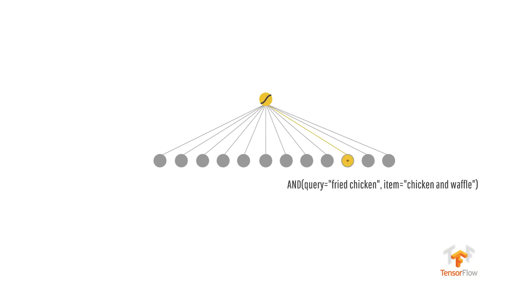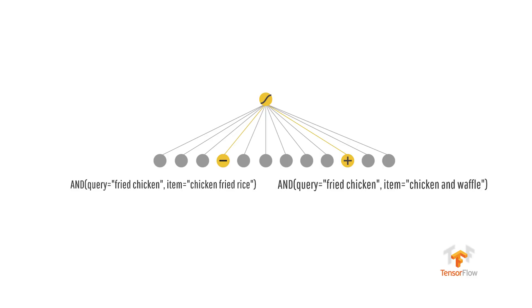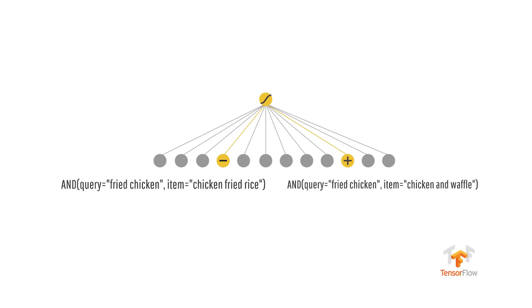Using wide linear models, you can use a wide set of cross-product feature transformations to memorize specific feature combinations. An example would be when the user says the query "fried chicken" — your model might memorize that chicken and waffles is more relevant than chicken fried rice.